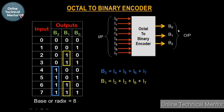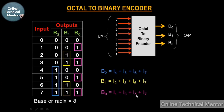For the last case, B0: when the inputs are I1, I3, I5, and I7, B0 becomes high. That means for odd-numbered inputs, B0 becomes high. So: B0 = I1 OR I3 OR I5 OR I7 — if any one of these inputs becomes high, B0 will become high.